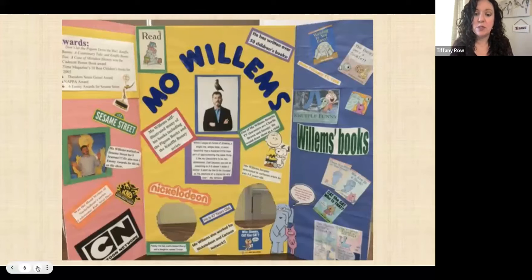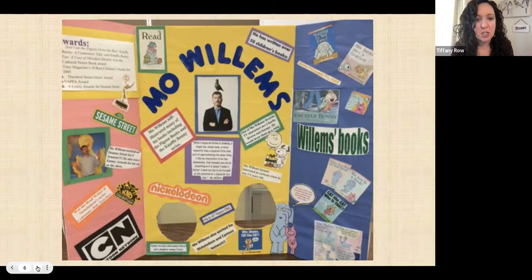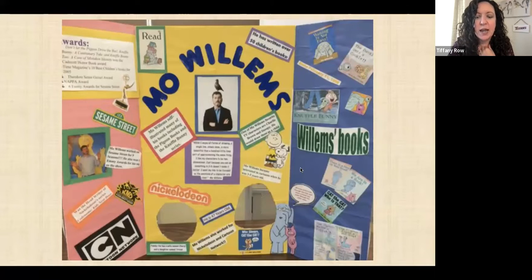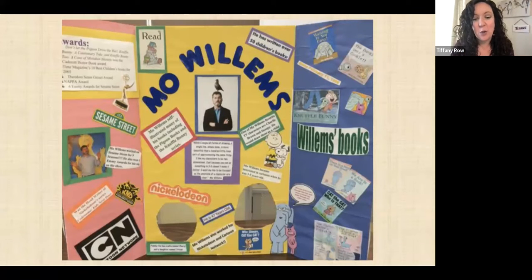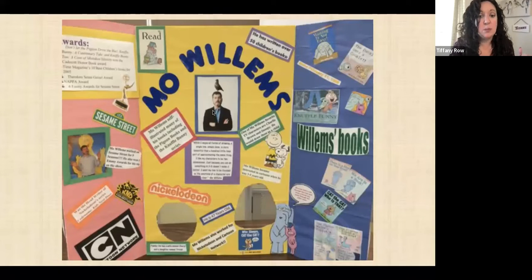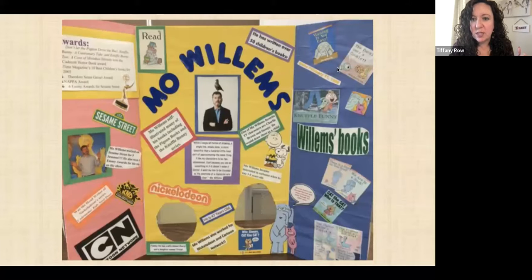Here are several examples. This is Mo Willems, obviously a very loved author — he does the pigeon books. The pigeon and the hot dog was like his first really popular book and he's written a whole bunch since then. This author's corner is actually a trifold poster presentation board, which is a really great way to do it because you do this once, put it away, and it's all ready to go for years after that. You don't have to find any wall space if that's a challenge. As you can see, they included a photo, some things he's involved with like Cartoon Network and Nickelodeon, pictures of his books, some bio and fun facts, and awards.